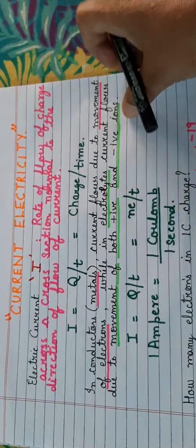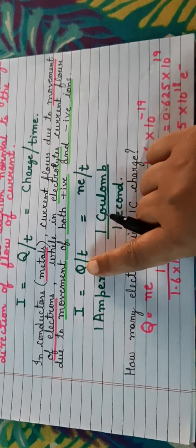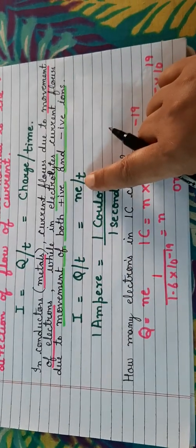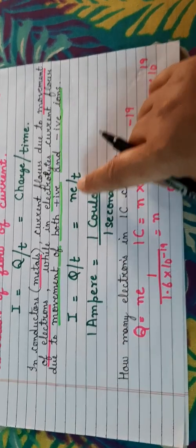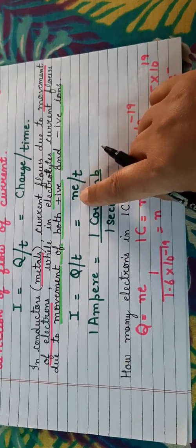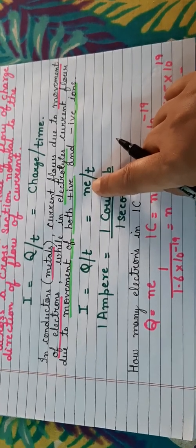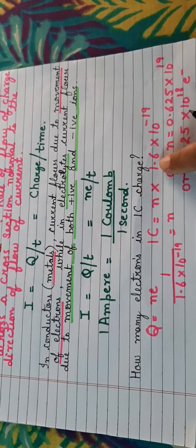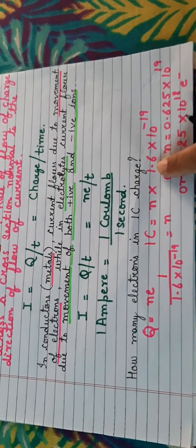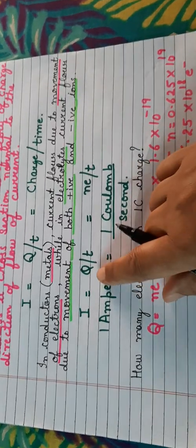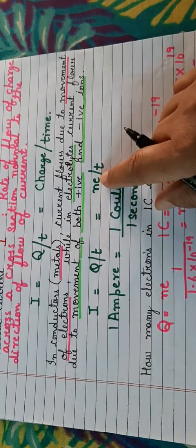Current is given by the formula Q/T, and Q is equal to NE. So current is also equal to NE/T, where N refers to the number of electrons and E refers to the charge of a single electron, which has a fixed value. The charge of an electron is 1.6 × 10⁻¹⁹ coulombs. Therefore, the formula for current is Q/T or NE/T.